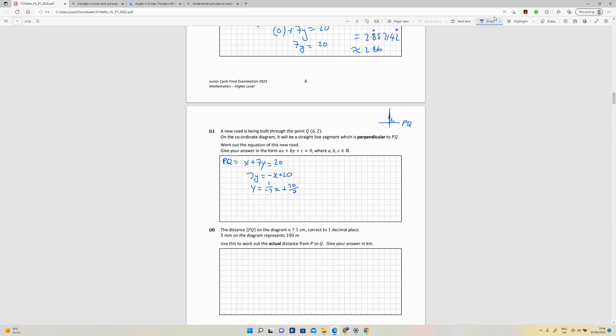So the slope of this then is, of course, this one, because this is m. y equals mx + c. So m in this case is this lad here. So the slope PQ is -1/7.